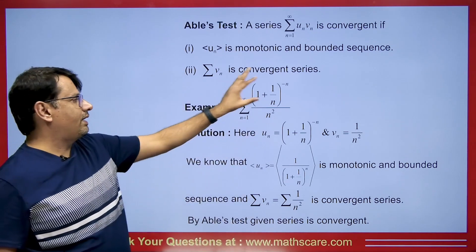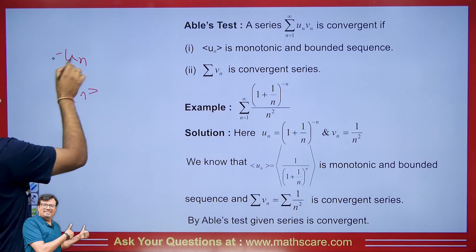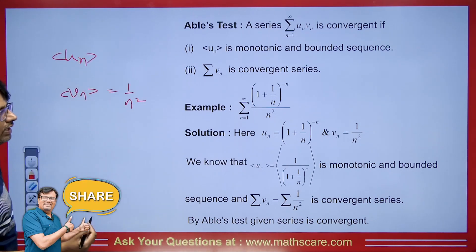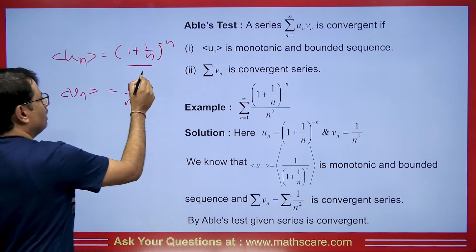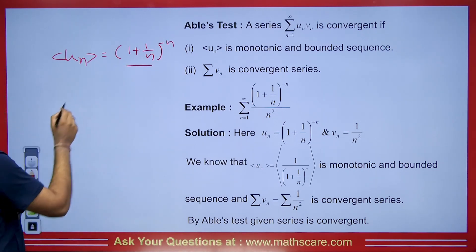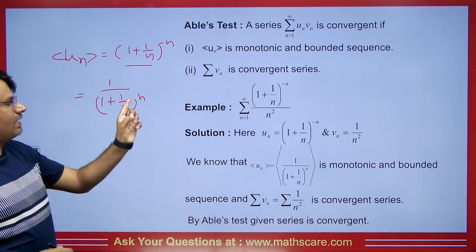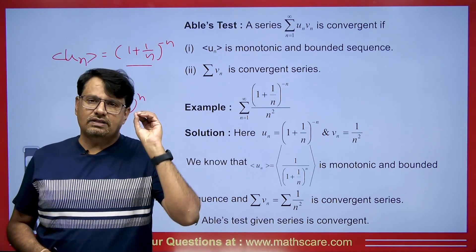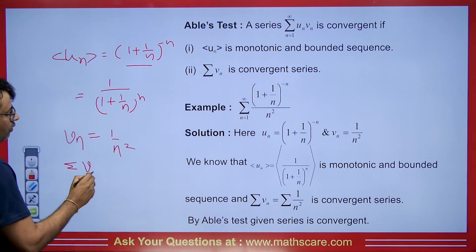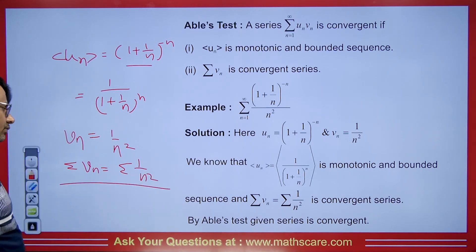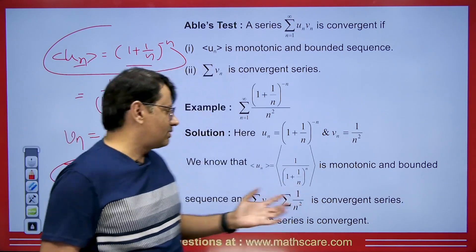For example, consider an infinite series involving 1/n². We take vn as 1/n² and un as (1 + 1/n)^(−n). We can write this as 1/(1 + 1/n)^n. This sequence is monotonic, and as n tends to infinity it approaches 1/e, so we can conclude it is monotonic and bounded. For vn = 1/n², its infinite series is convergent by the p-series test. Since vn is convergent and un is bounded and monotonic, by Abel's theorem the product series is convergent.